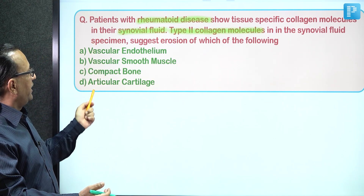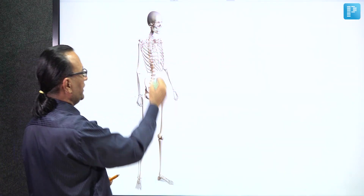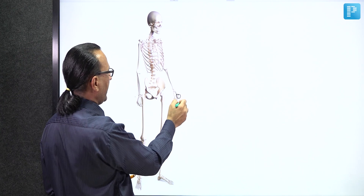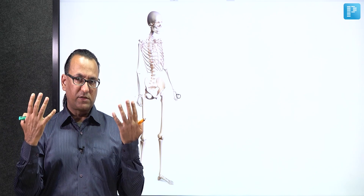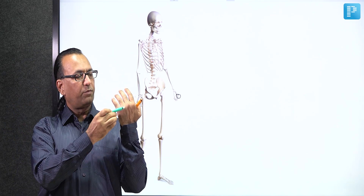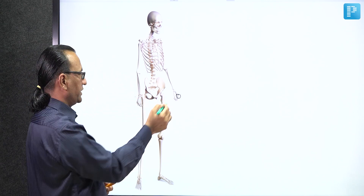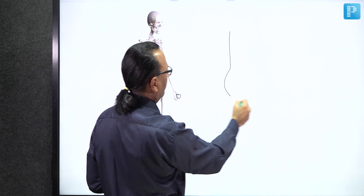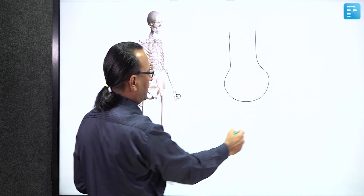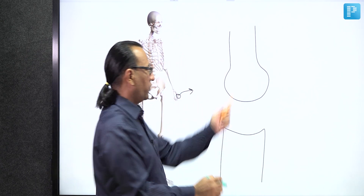Rheumatoid arthritis mainly involves the small joints of the hands and feet, predominantly in females, with bilateral involvement of the metacarpophalangeal joint and proximal interphalangeal joint. Morning stiffness, painful bilateral soft tissue swelling is characteristic. Now, drawing the diagram of a synovial joint - the metacarpal bone articulating with the proximal phalanx forms the metacarpophalangeal joint.